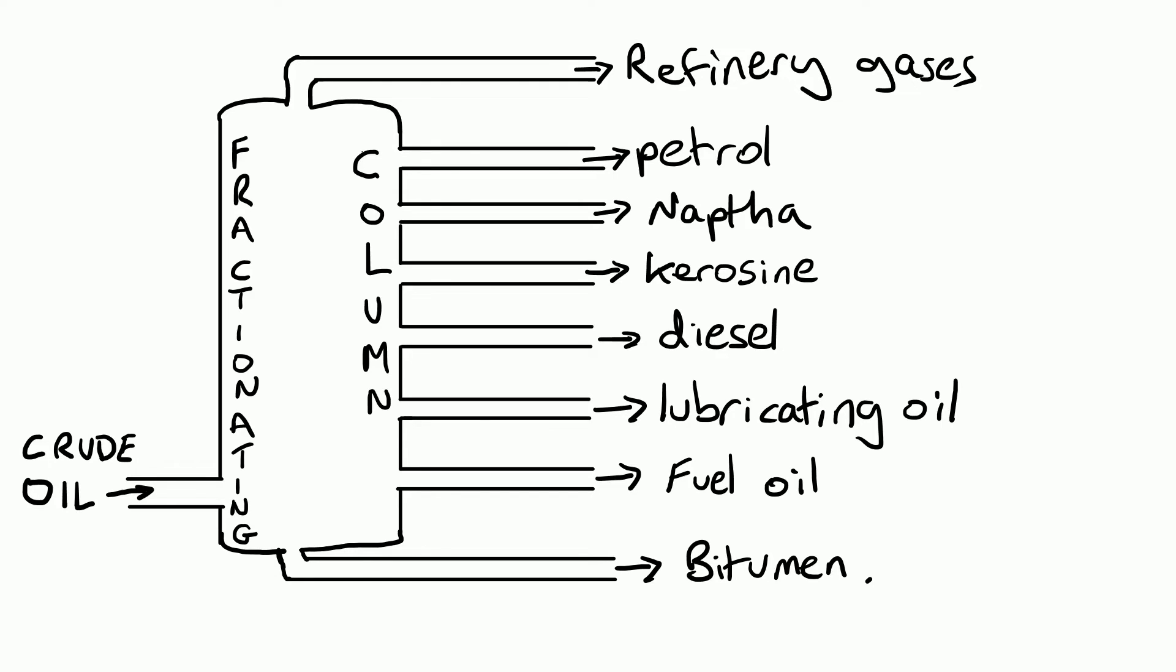Now the third one, naphtha, is what we call a feedstock, and that means it's a useful chemical that's used by the chemical industry to make other things from. It's a raw material for the chemical industry. The next one down, kerosene, is the fuel that aircraft like aeroplanes use. Then diesel can be used in some cars, also in lorries and trains.